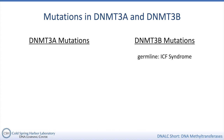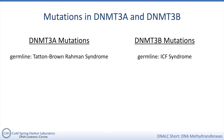Germline mutations in DNMT3A, on the other hand, are associated with Tatton-Brown-Rahman syndrome, also known as DNMT3A overgrowth syndrome. This syndrome has different patterns of altered methylation than ICF syndrome and different phenotypes. Somatic mutations are mutations that aren't inherited, but rather happen in a cell in someone's body, which then gets passed on to that cell's daughter cells.